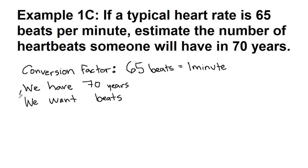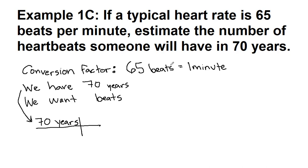Just as with the previous two problems, our starting point becomes the beginning of our train tracks. We have years right now, and looking ahead to our destination, we know we want beats. We've written down a conversion from beats to minutes, so we need to turn this number of years into a number of minutes.